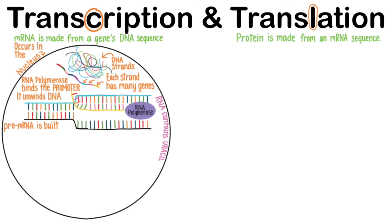It is called pre-mRNA at this point because most genes have the potential to code for multiple proteins depending on how the mRNA transcript is edited. Once the RNA polymerase reaches the end of the gene, the sequence triggers release of the mRNA transcript.